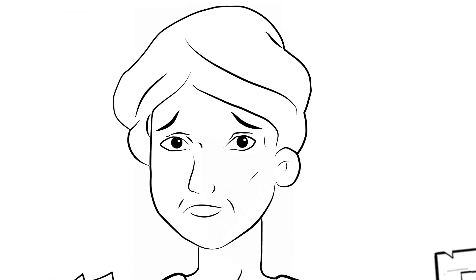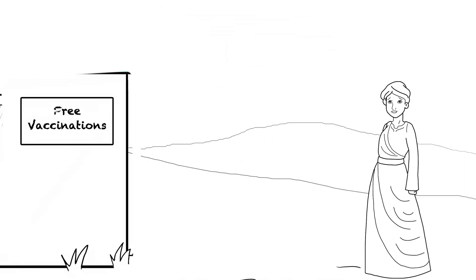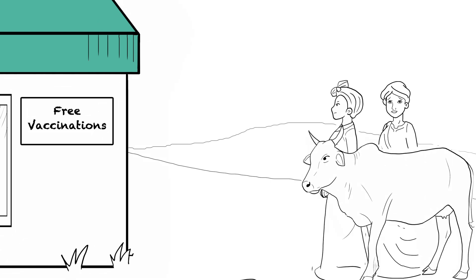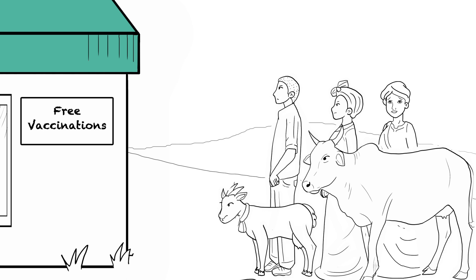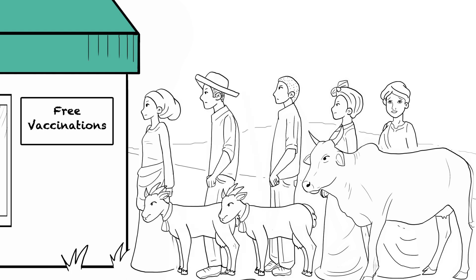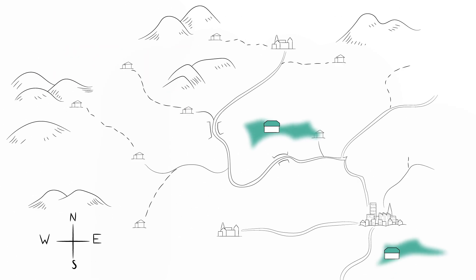Conventionally, aid agencies and governments tried to help people like Petra directly. No vet services? Then let's vaccinate livestock. Or even, let's hand out cattle to replace any that die. The problem with such solutions is that, first, they inevitably only reach a few people, so they lack widespread impact.